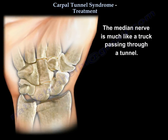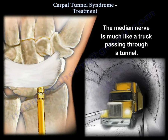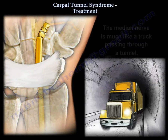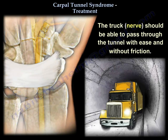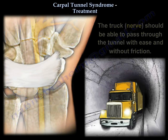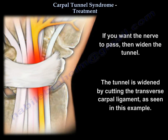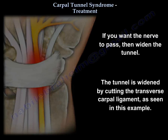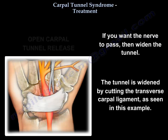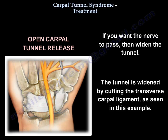The nerve is much like a truck passing through a tunnel — the nerve should be able to pass through the tunnel with ease and without friction. So, if the tunnel is narrow, the nerve cannot pass, and if you want the nerve to pass, then widen the tunnel. We widen the tunnel by cutting the transverse carpal ligament, as shown in this example.